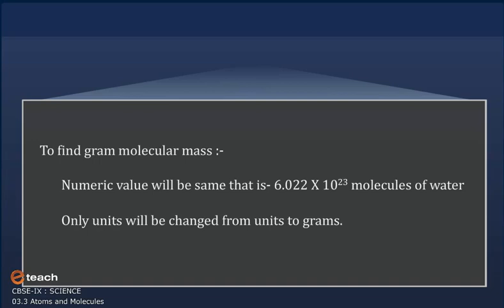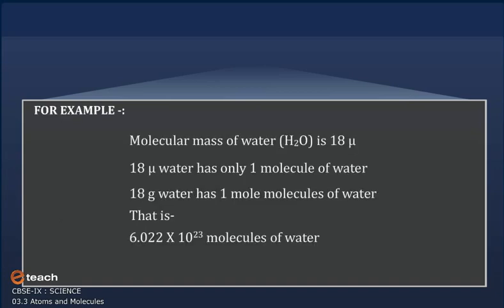For the molar mass of a molecule, we keep the numerical value the same as the molecular mass, but simply change the units from u to g. For example, as already calculated, the molecular mass of water H2O is 18u. So 18u water has only one molecule of water, while 18 grams of water has one mole of molecules, i.e., 6.022×10²³ molecules of water.